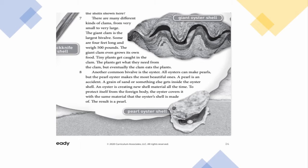The question tells us to look in paragraph 8. I made a copy of it for this PowerPoint. We're looking for the sentence that talks about the pearl being an accident. Looking at the first sentence — nothing there. Second sentence has the word pearls but nothing about accident. And there it is in our third sentence: A pearl is an accident. I've highlighted that.